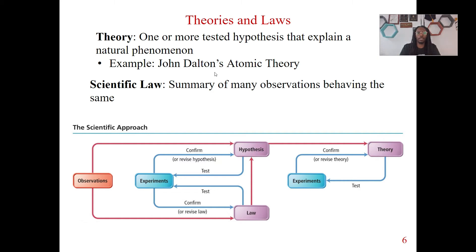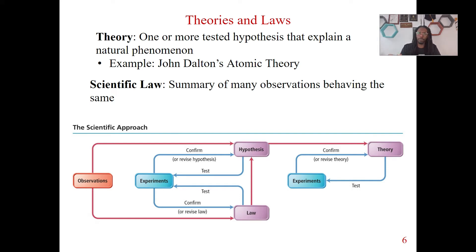A good theory — for example, Dalton's atomic theory, which we're going to go over later. Basically, he proposed that matter is composed of atoms. That was what he observed, and he came up with this theory. He did some experiments to test the hypothesis he had.